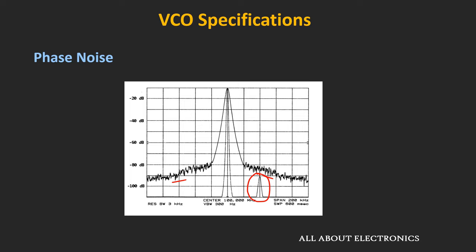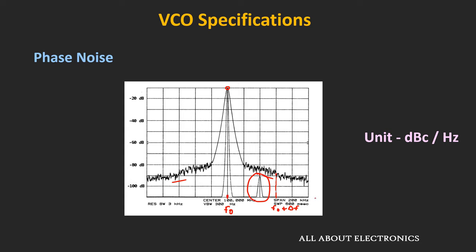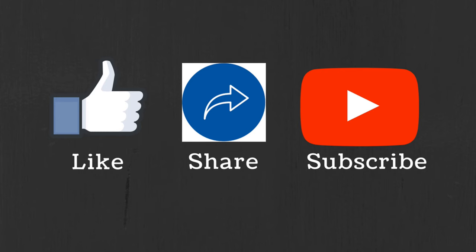Phase noise is measured with respect to the carrier power, at a certain offset from the carrier frequency. If F0 is the carrier frequency, then the phase noise at F0 plus Δf is the noise power in a 1 Hz bandwidth at F0 plus Δf. In the datasheet, this phase noise is represented at different offsets from the carrier frequency, and it is measured in units of dBc/Hz. That covers all the important specifications of the VCO. I hope you understood what a voltage control oscillator is and the different aspects of the VCO. If you have any questions or suggestions, let me know in the comment section below, and if you liked this video, hit the like button and subscribe to the channel.